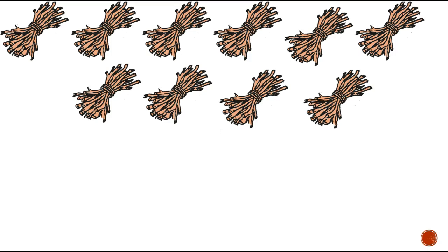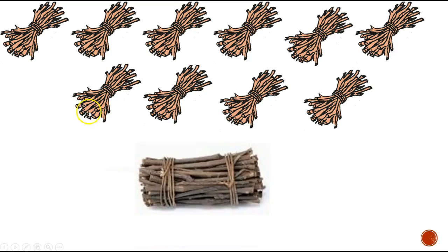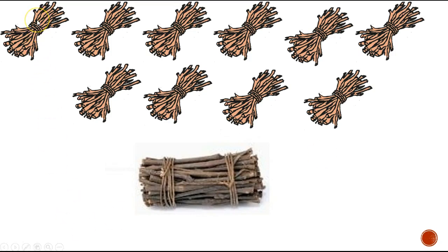We would need to make a bundle of 100. Let's count: 10, 20, 30, 40, 50, 60, 70, 80, 90, 100. So I have enough bundles here to make a hundred. Let's count how many bundles altogether: 1, 2, 3, 4, 5, 6, 7, 8, 9, 10. So 10 bundles of 10 make 100.